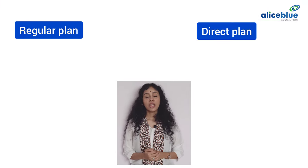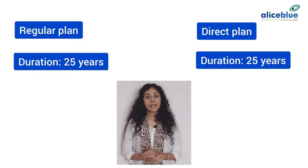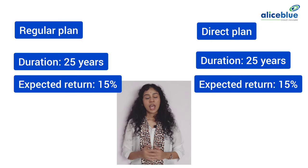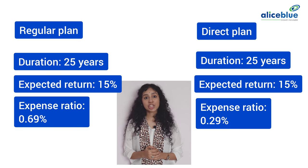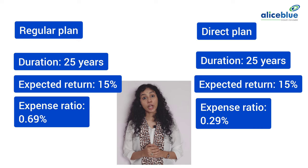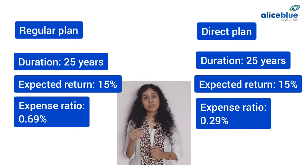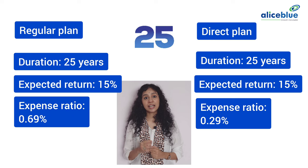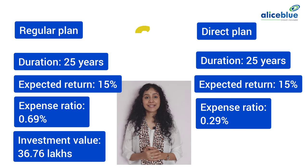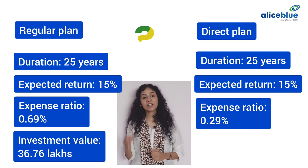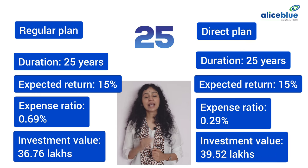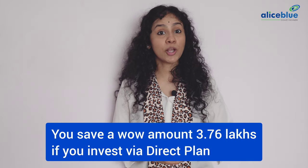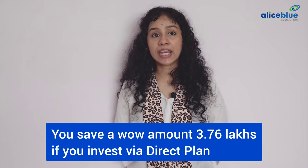Investment value after 25 years will be Rs 36.76 lakhs in a regular plan, and Rs 39.52 lakhs in a direct plan. You save a whopping amount of 3.76 lakhs if you invest via a direct plan.